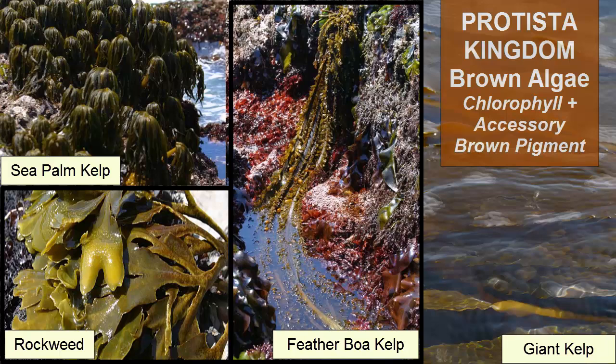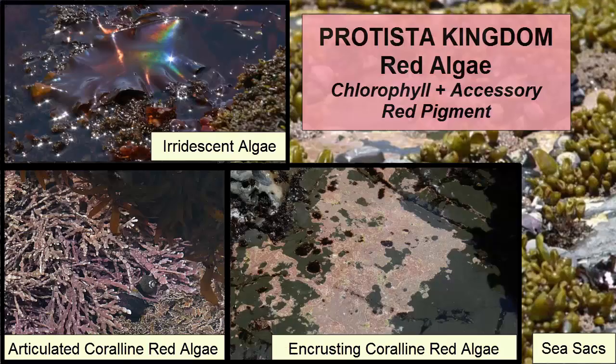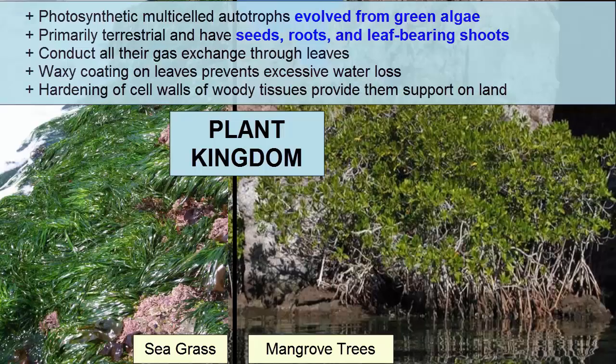Brown algae include all kelp: oak blade kelp, feather boa kelp, giant kelp, bullwhip kelp, sea palms, and rockweed. The Rhodophyta phylum, or red algae, contains multicellular autotrophs with chlorophyll and an accessory red pigment, and includes encrusting and articulated coral algae, brillo pad algae, neptune's washcloth, sea sacks, iridescent algae, and nori.